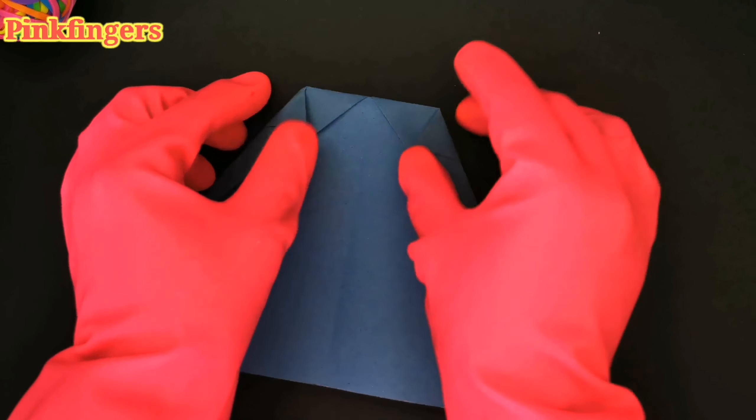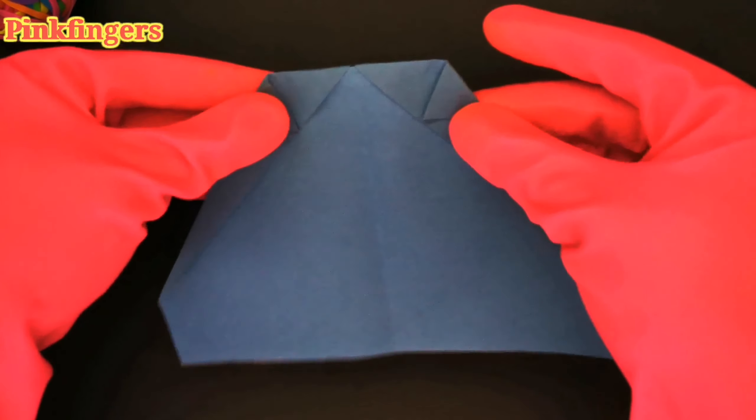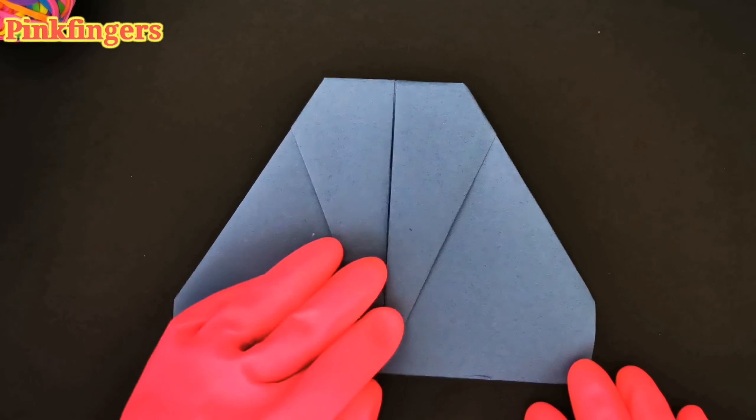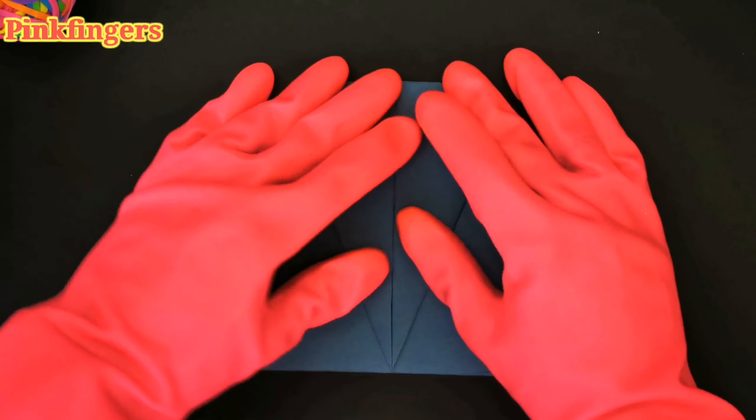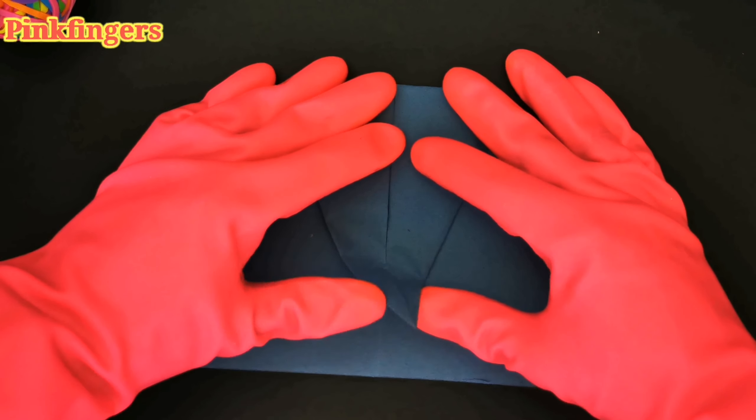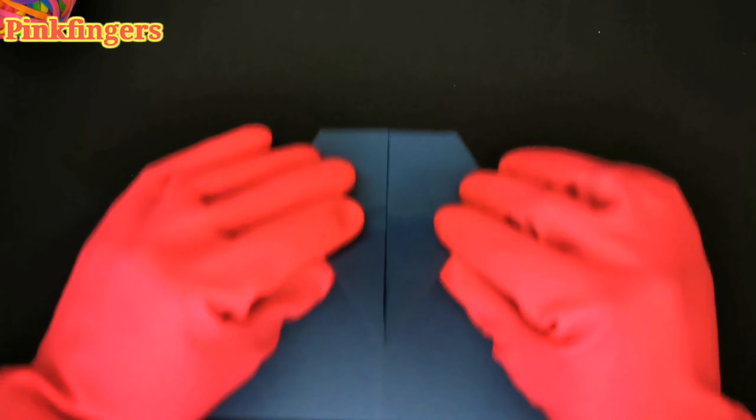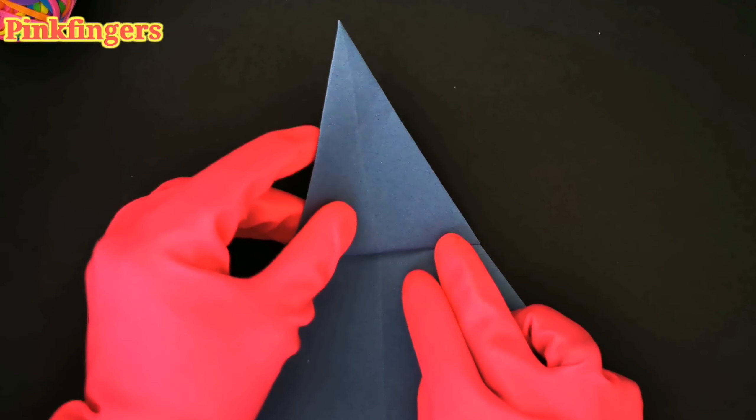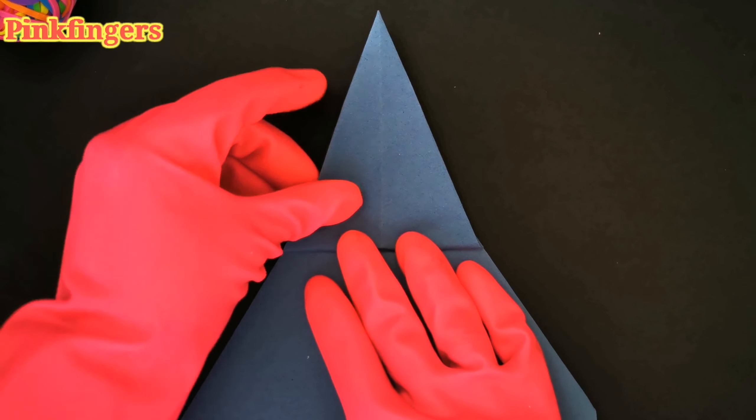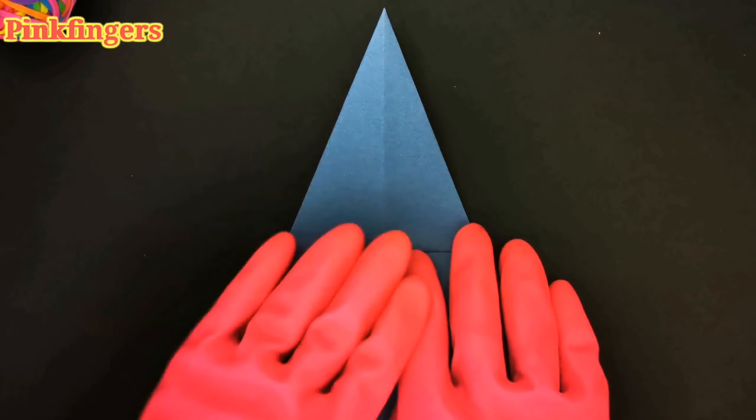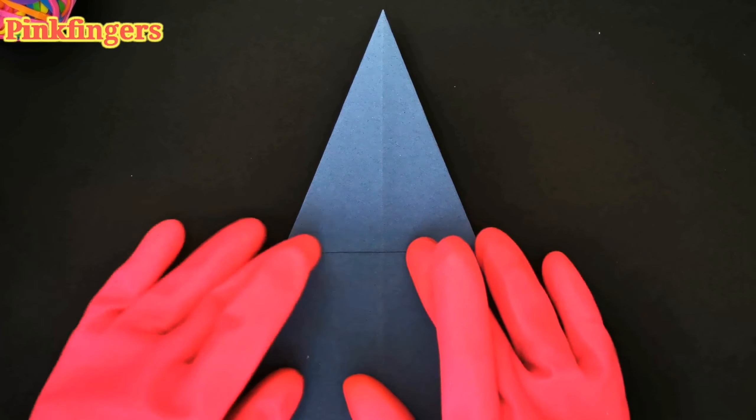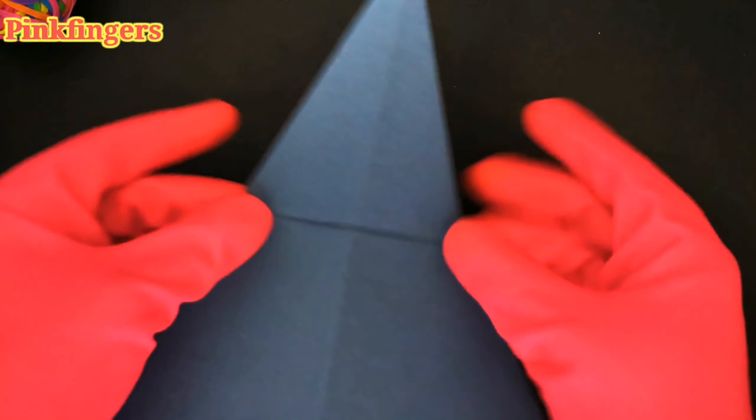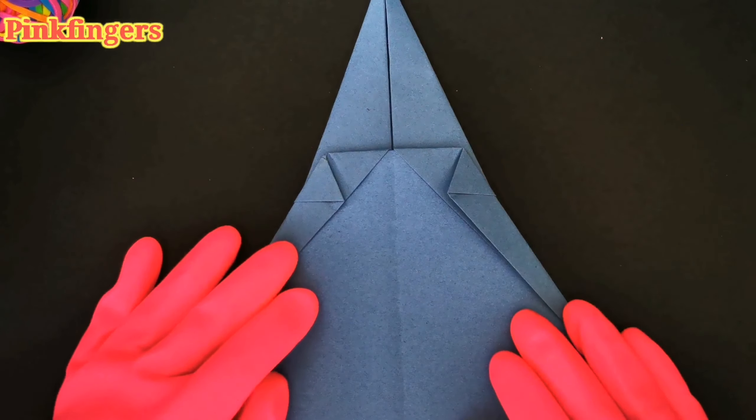Next, we're going to fold the triangle. So the triangle that was touching the base as a reference point, we're going to lift it up and use the tip as a reference point. Once you have that lined up, you can press down hard and it should look very good, very symmetrical.